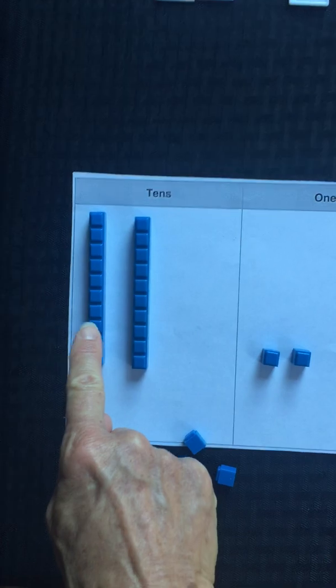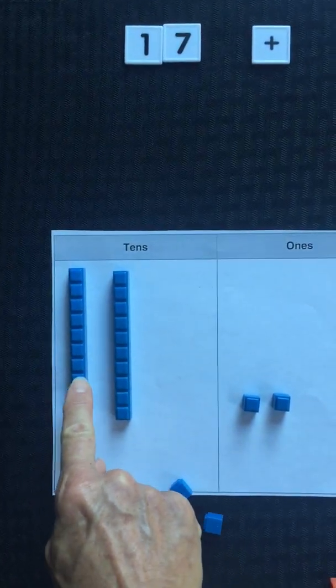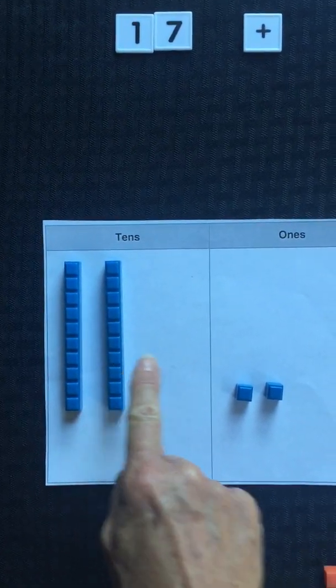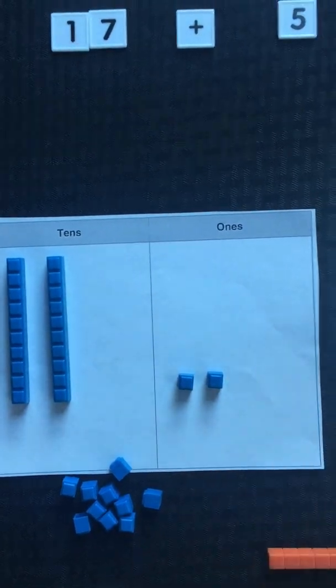So when I add 17 and five, I get 10, 20, 21, 22.